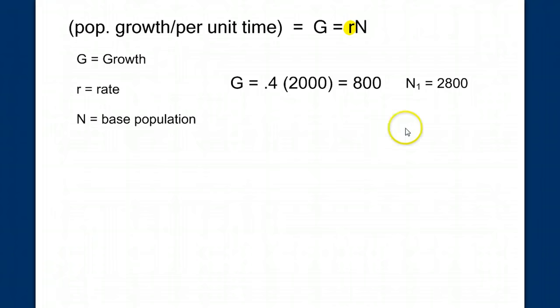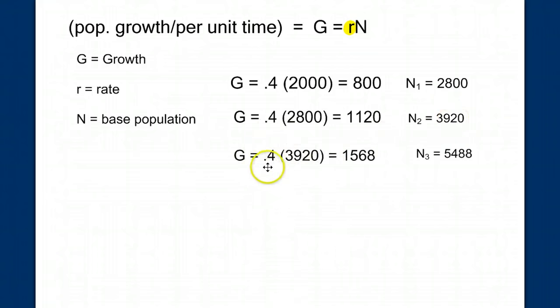Now what's going to happen the next month? The next month, our R, our rate of growth, doesn't change. But our N does change. We have now 2,800 to grow from. So in month number two, we have our 2,800 person population, or mouse population, and we add another 1,120 during the second month, which brings our population to 3,920. Let's look forward to the next month. The next month, we multiply our rate of growth times our new population size, 3,920. And this month, we add 1,568, bringing our population to 5,488. Now what can you see happening? Each month, our rate of growth is the same, but our amount of growth, the number of individuals we're adding, is increasing because our base population is increasing.